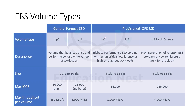These are the different types of EBS volumes that we have. We have general purpose SSD. So there are basically two types: one is SSD and one is HDD. SSD we know that these are fast performance disks, and HDD are a little bit slow and outdated now.